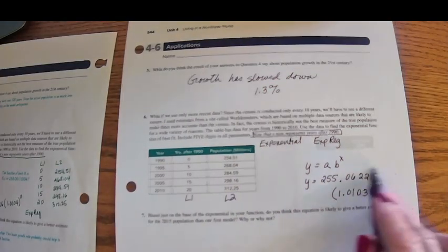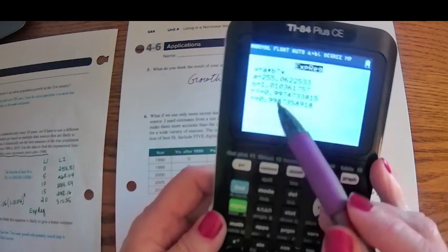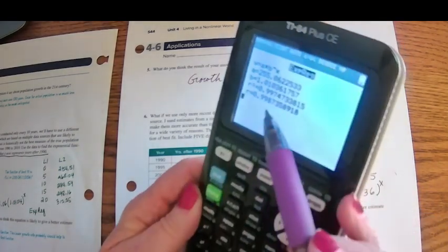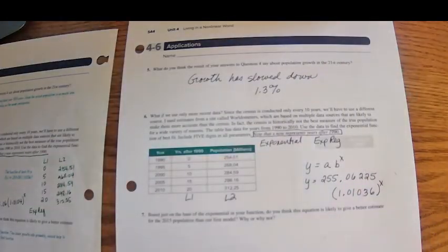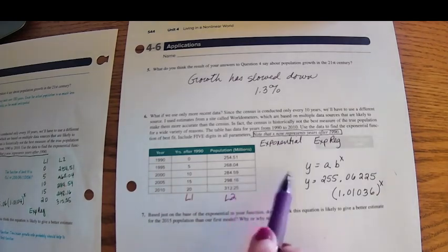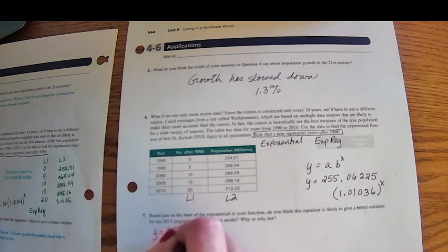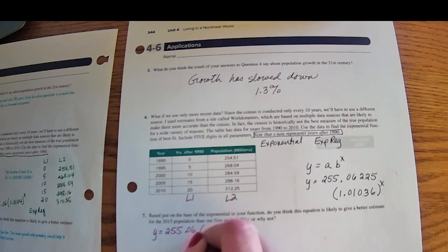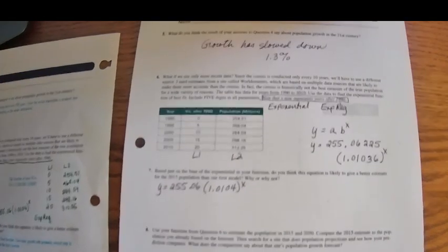This is the exponential function that the calculator came up with that matches this data. And if we look at the correlation coefficients, it's really close to 1. So this is a very good model. These data values actually fit very closely to this model. And it said include five digits in all the parameters. I think I can just write this as 255.06 times 1.0104 to the x. That's the exponential function that the calculator came up with.